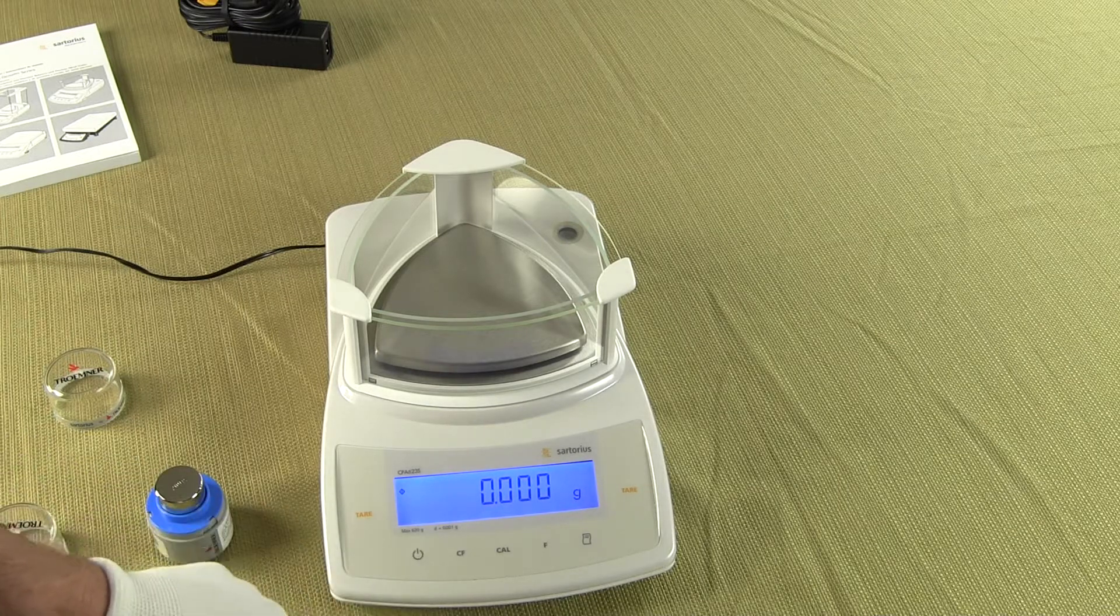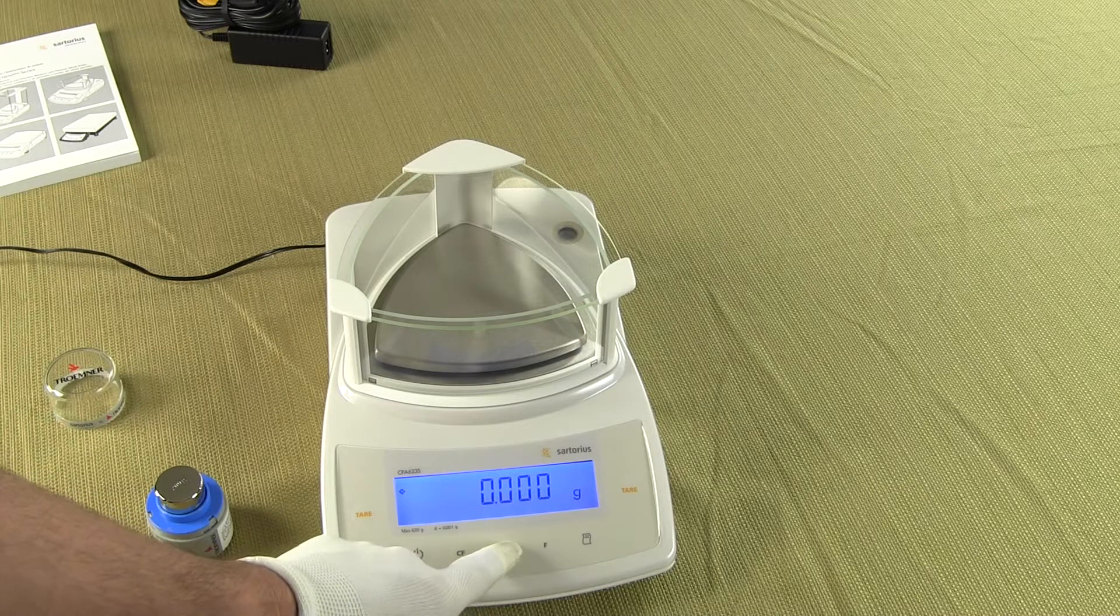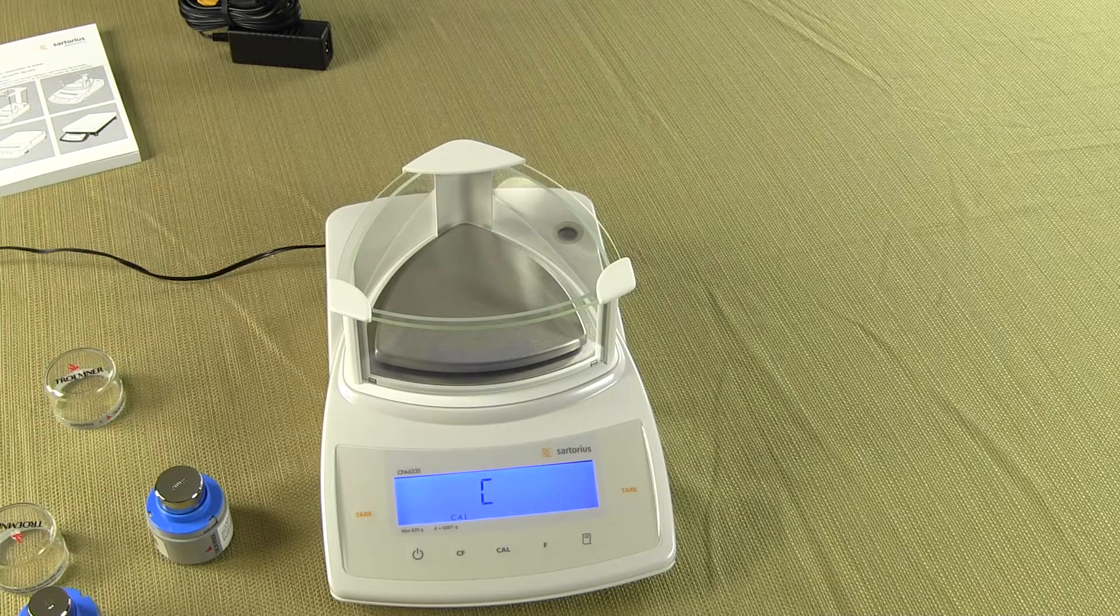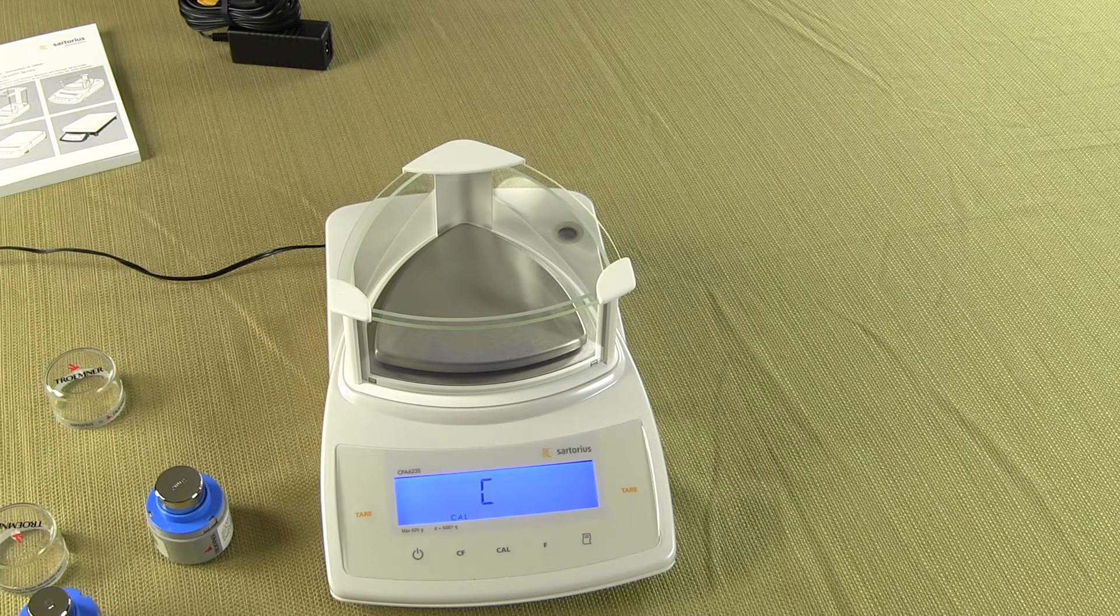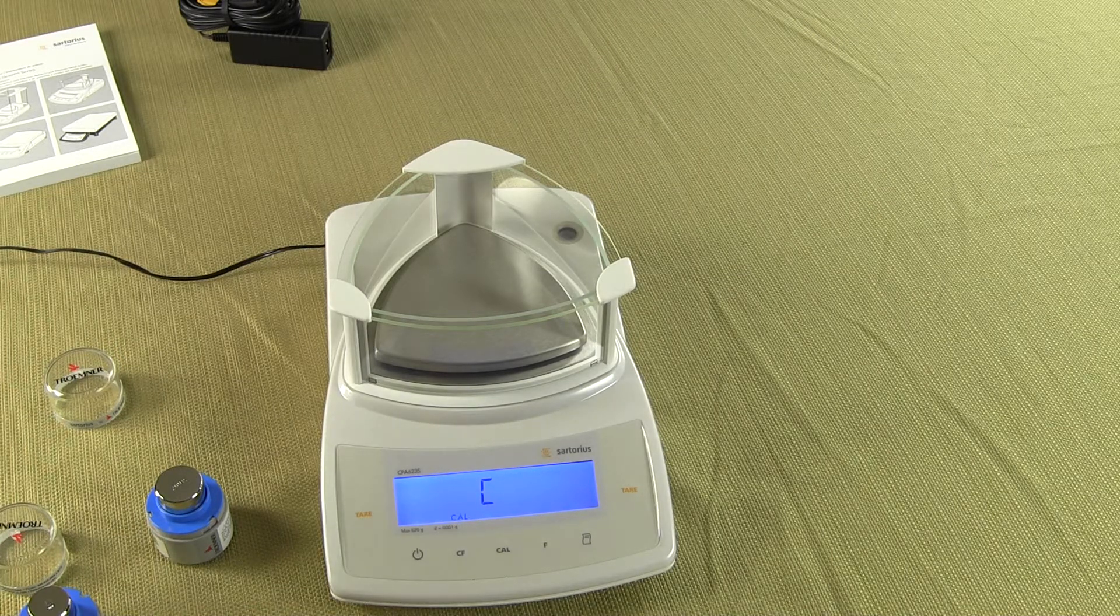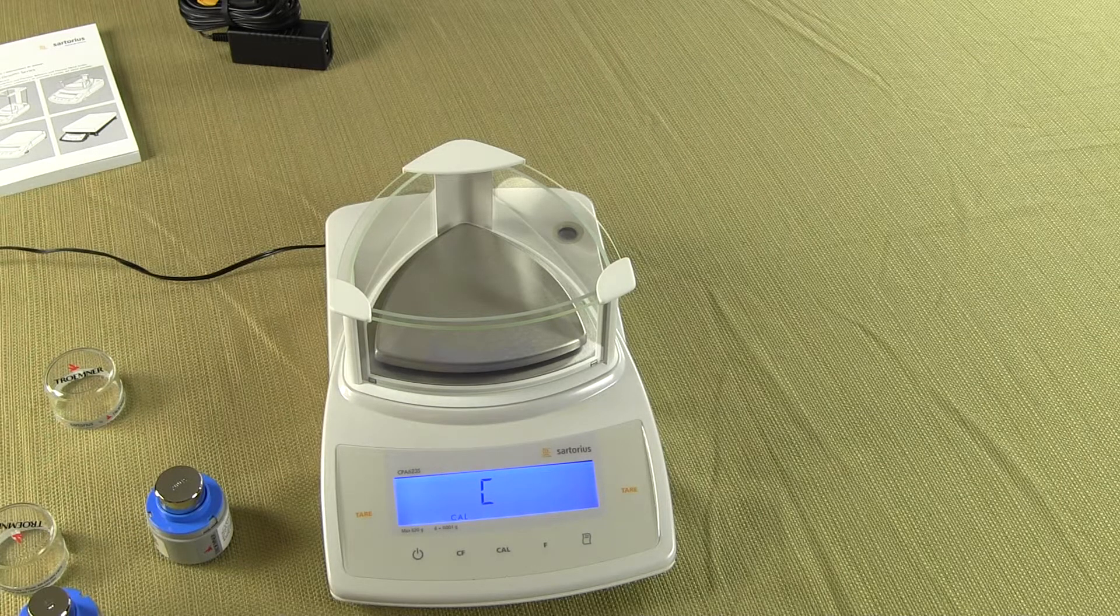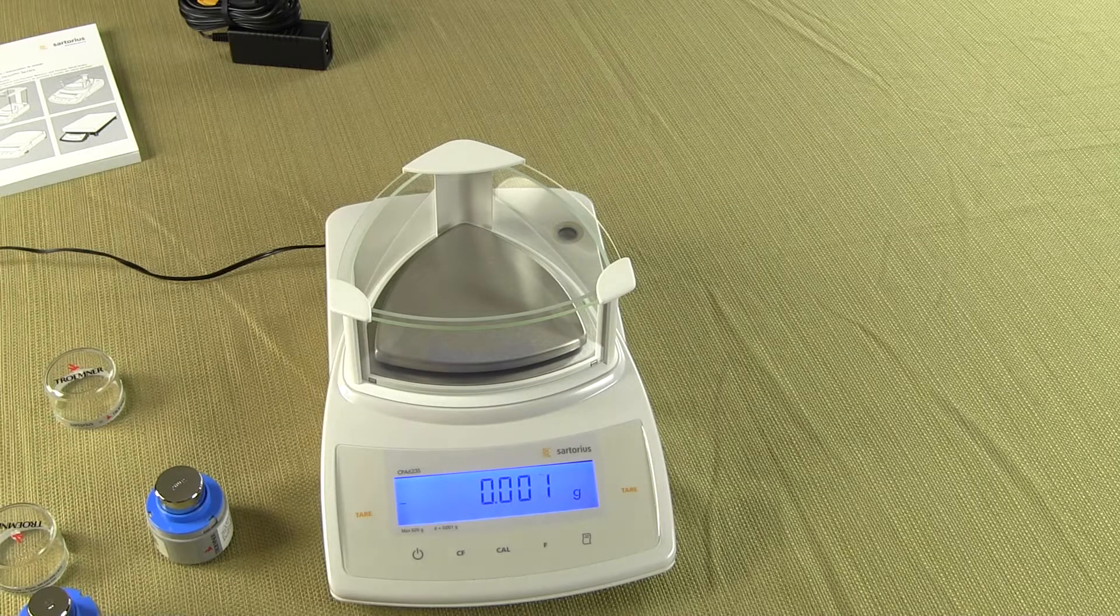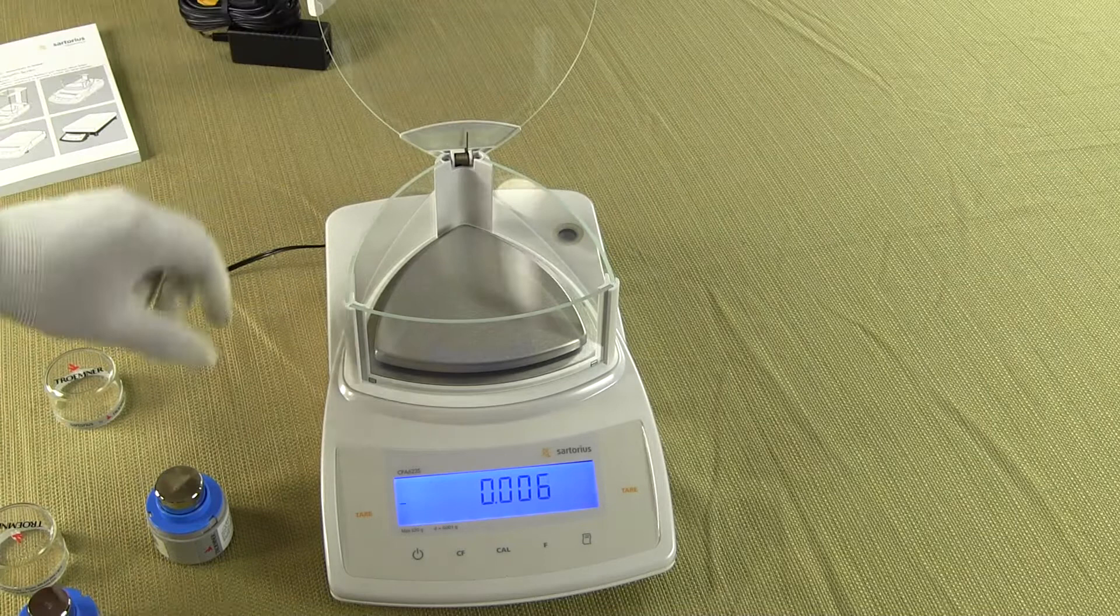So to do an internal calibration while the balance is running one simply presses the cal button and you'll hear the servo motor. And the balance has now completed its calibration and again I can put on my weights.